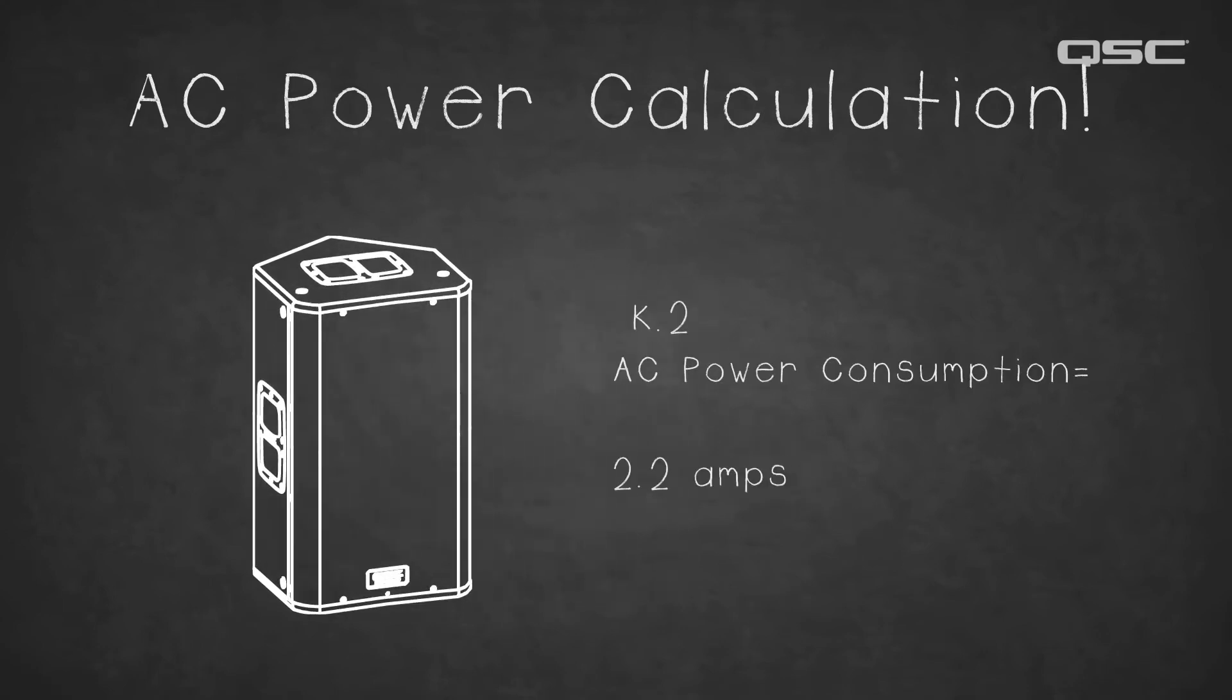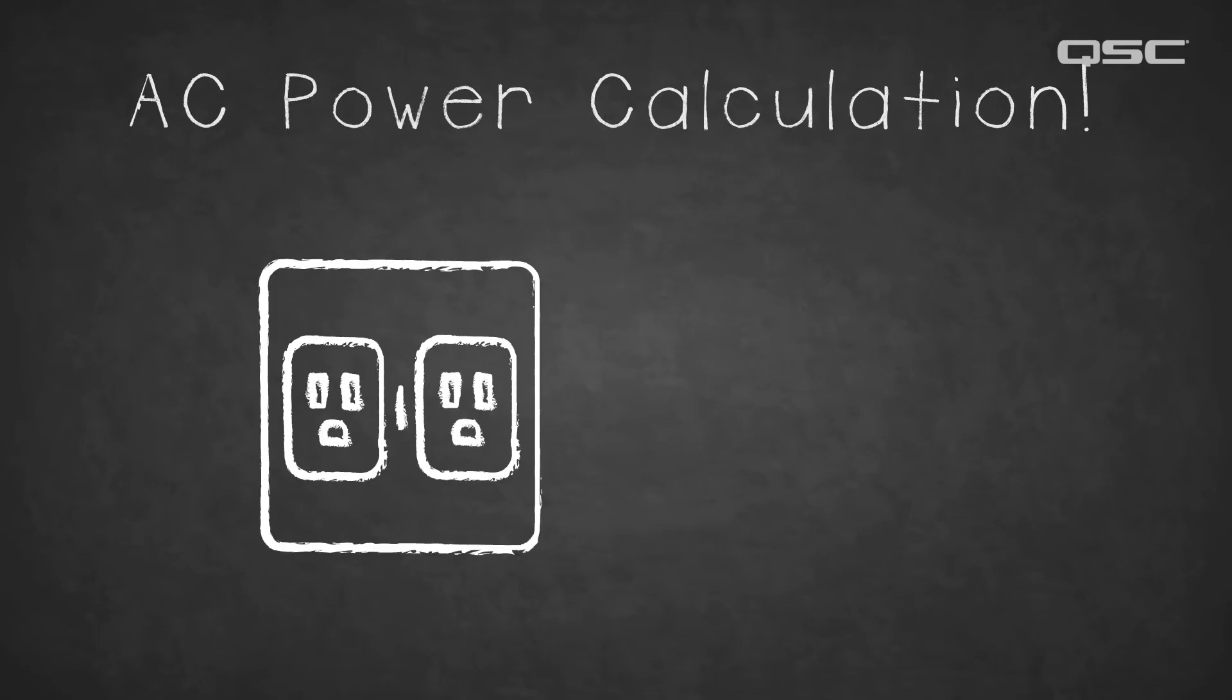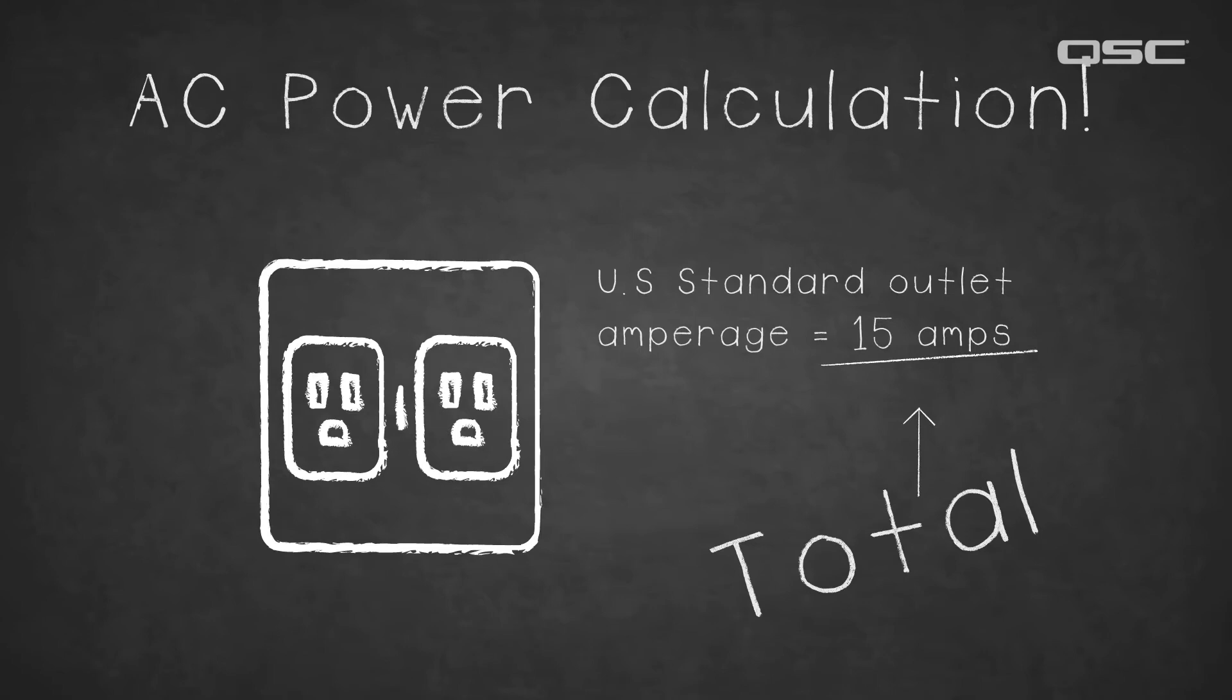The K.2 series loudspeakers draw 2.2 amps of power from an outlet. The standard amperage from an electrical outlet differs from country to country, but in the US, that standard is 15 amps.